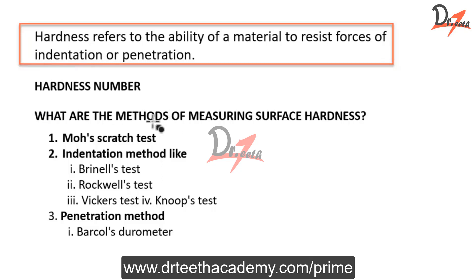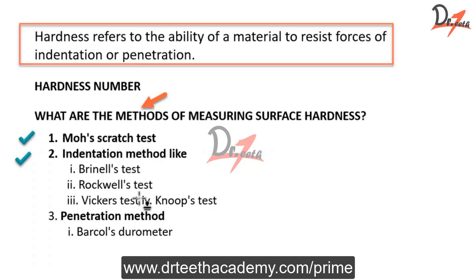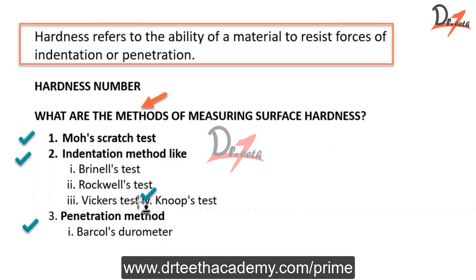So now we know that knowing the hardness is important. What are the methods of measuring hardness? We have the scratch test, and we have the indentation method — like the Brinell test, Rockwell test, Vickers test, and the Knoop test. These four tests — Brinell, Rockwell, Vickers, and Knoop — are very important for us.